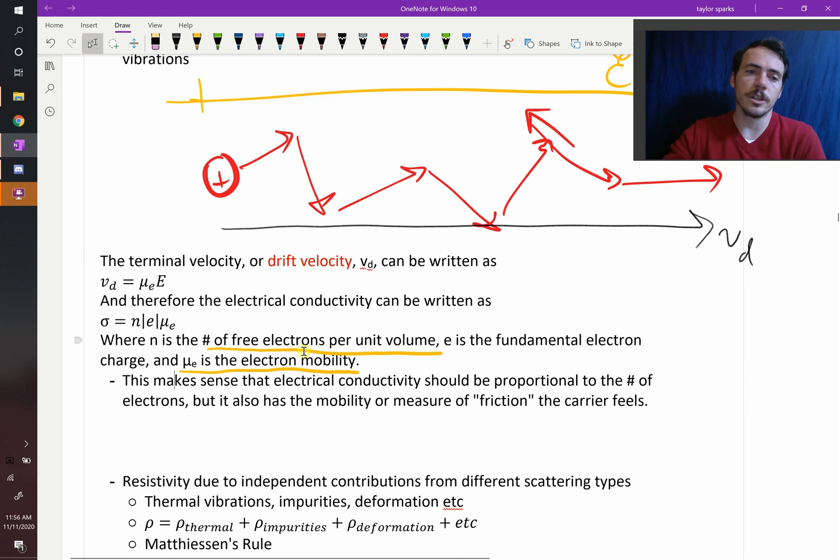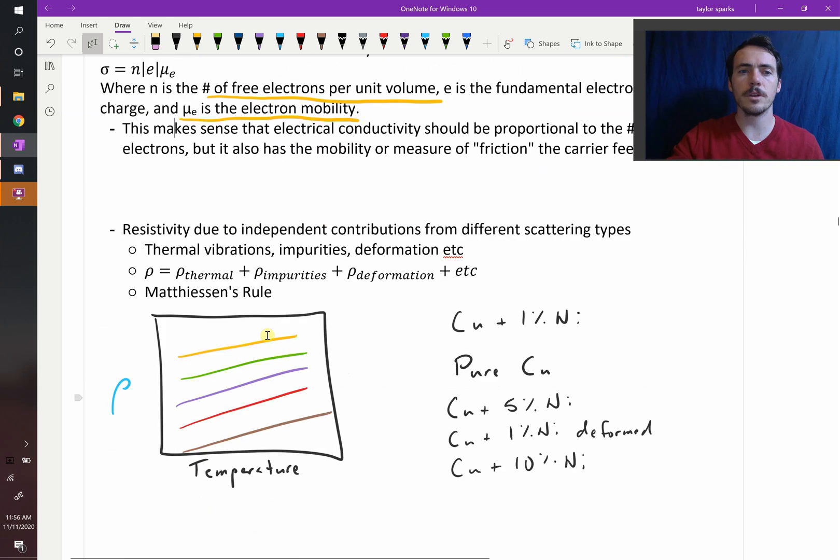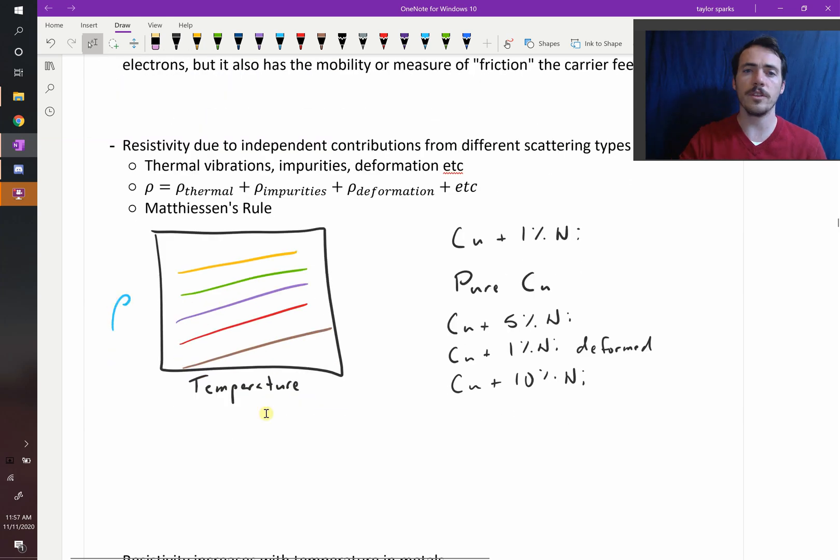If you want to calculate resistivity, you would calculate conductivity and then take one over that. There's something called Matthiessen's Rule that says the overall resistivity is taking into account lots of different contributions: resistivity from thermal vibrations, from impurities, from deformation like dislocations in your material. What you typically see is a plot like this when you plot resistivity as a function of temperature. One thing you see in metals is that resistivity rises with temperature—things become more resistive as you heat them up. That's a fundamental characteristic of metals. You heat it up, they don't conduct heat as well. That makes sense because you're heating up and causing the atoms to vibrate more, and those vibrations are going to scatter your electrons. As you introduce impurities, that's also going to scatter them, and as you introduce dislocations, that's going to scatter them too.